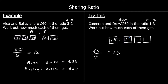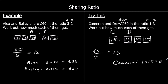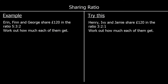So each box has got £15 in it. Cameron's got one box with £15 in it, so £15. And Drew's got three 15s, which is £45.